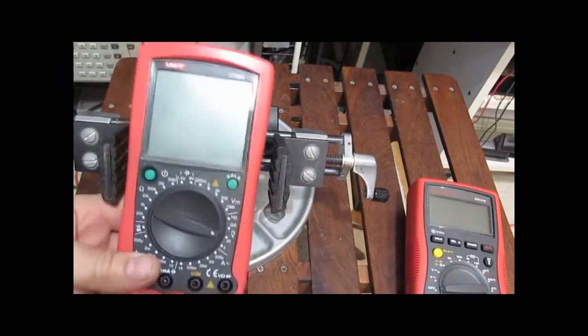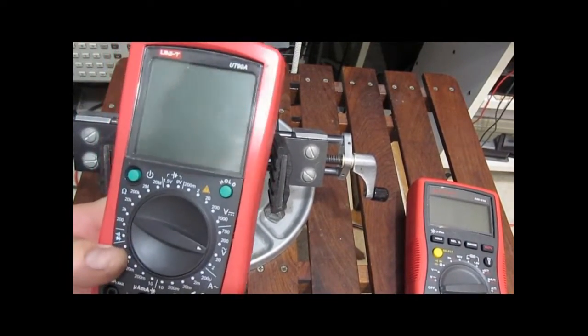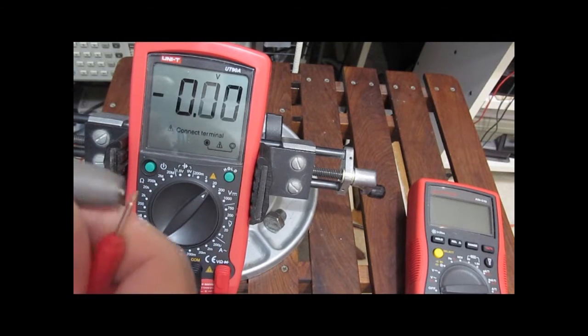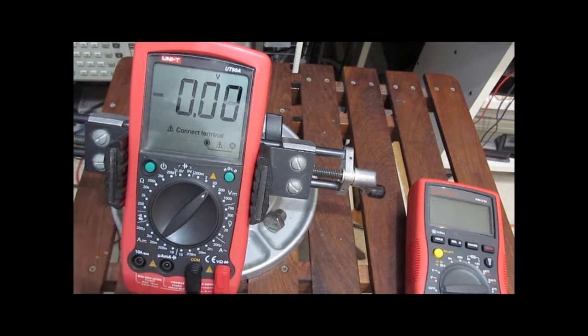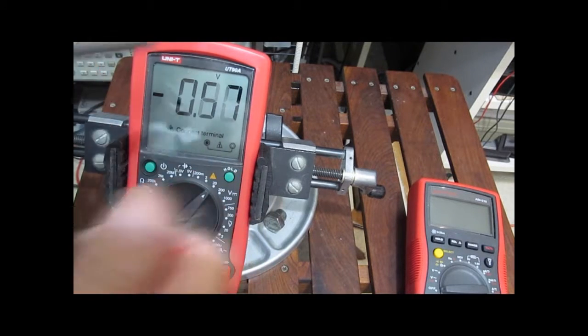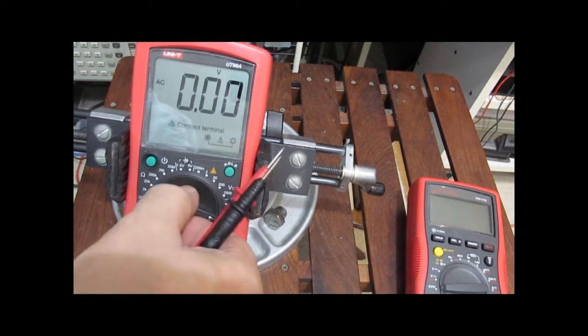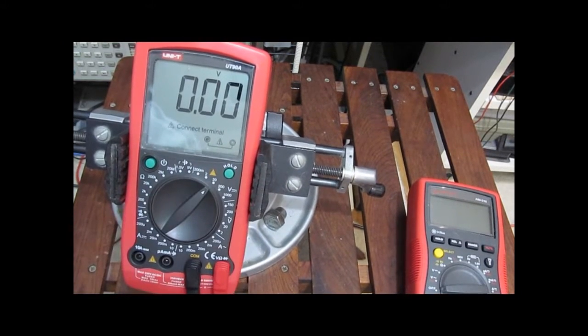So let's try the Unity next. This is the UT90A. We'll do the same thing here. Alright, okay, look at AC volts and DC volts.